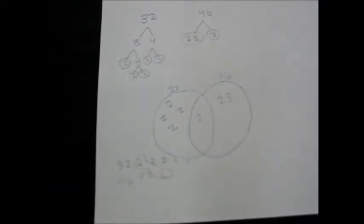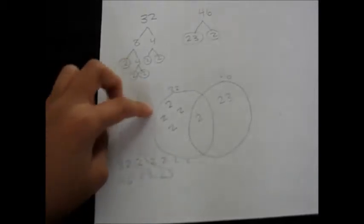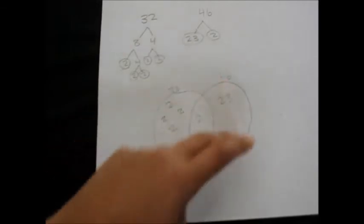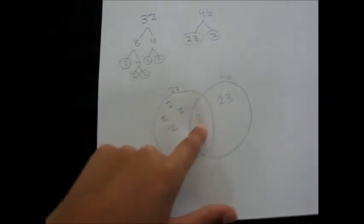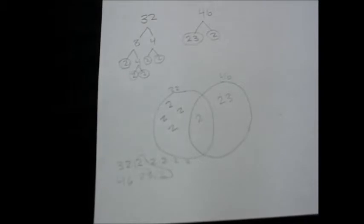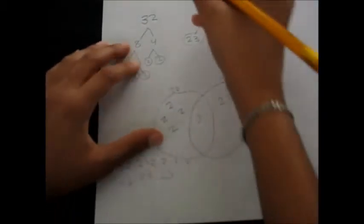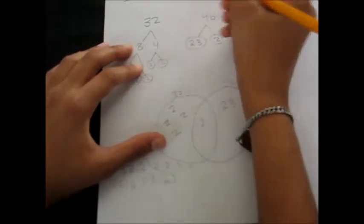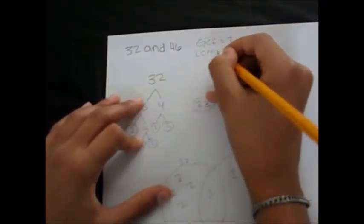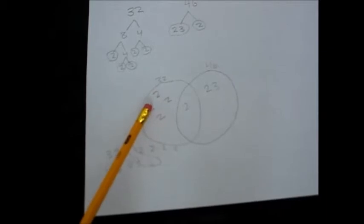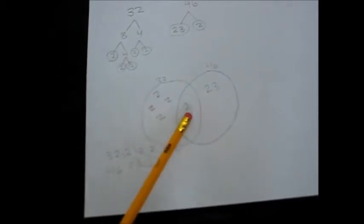So now what we do to find the LCM and GCF: to find the LCM we multiply everything in all three sections of the Venn diagram, and to find the GCF we only multiply what's in the middle circle. So the GCF is 2. For the LCM we do 2 times 2 times 2 times 2 times 2 — that gives us 32 — and then 32 times 23.